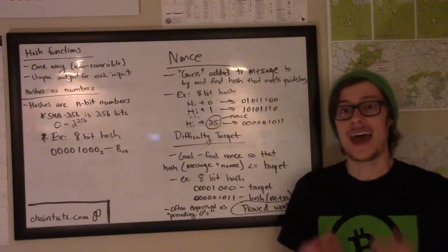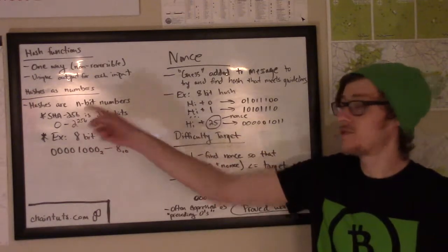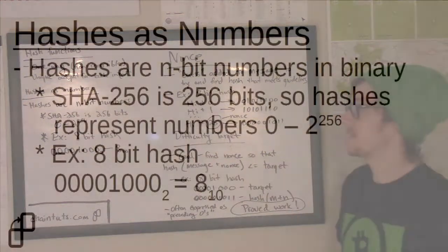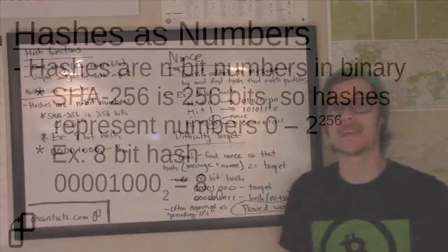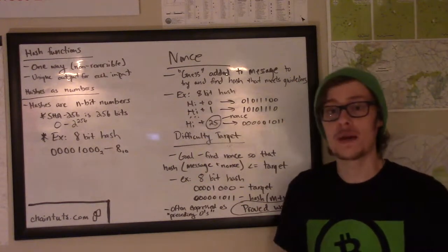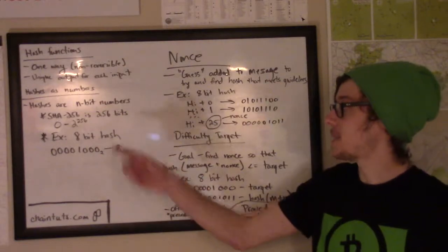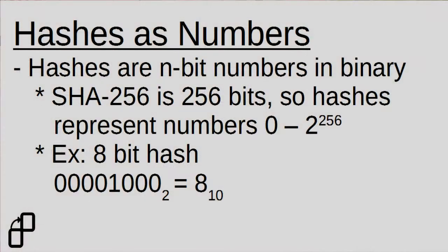It's important to notice that hashes actually can represent binary numbers. For example, a SHA-256 hash represents a 256-bit number, which is all the numbers from 0 to 2 to the 256th power. It's really hard to imagine how big this space of numbers actually is. If we think on a smaller scale, if we had an 8-bit hash, 00001000 is equal to the number 8 represented in decimal.